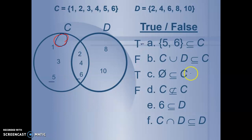What about letter E? 6 is a subset of D. Yes, that's true. 6 is a part of D. And the last one. C intersecting D. So the intersection of C and D is a subset of D. That one is true. The intersection of C and D is a subset or part of the whole set of D. We can see that in the Venn diagram, but we can also see it up here. 2, 4, and 6 are a subset of D.